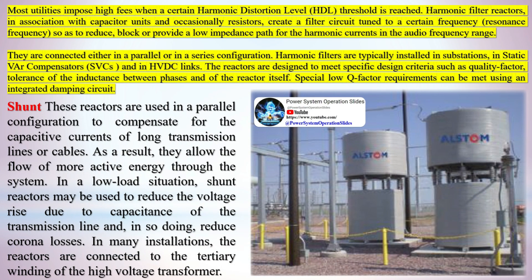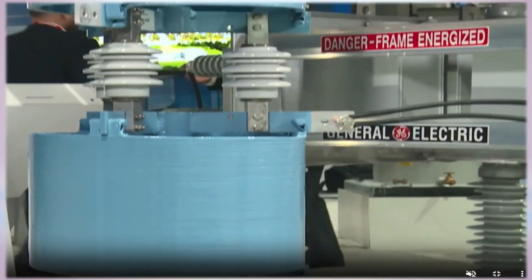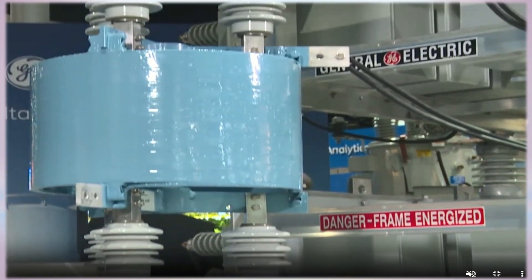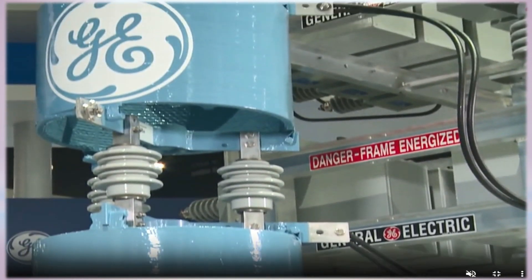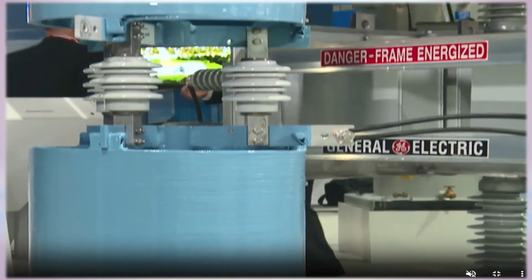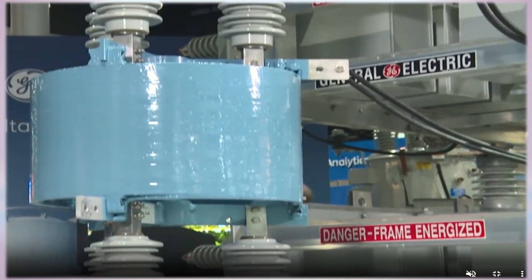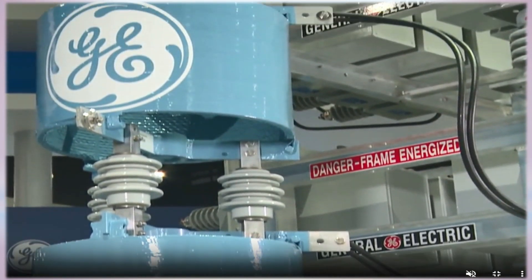Harmonic filter reactors, in association with capacitor units and occasionally resistors, create a filter circuit tuned to a certain resonance frequency so as to reduce, block, or provide a low impedance path for harmonic currents in the audio frequency range. They are connected either in parallel or series configuration. Harmonic filters are typically installed in substations, static VAR compensators (SVCs), and HVDC links. The reactors are designed to meet specific criteria such as quality factor and inductance tolerance. Special low Q factor requirements can be met using an integrated damping circuit.